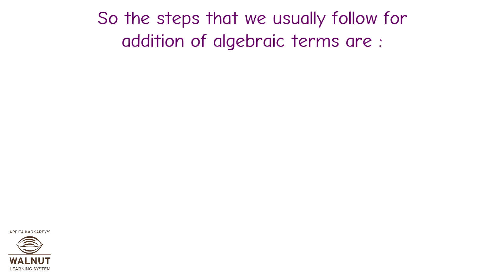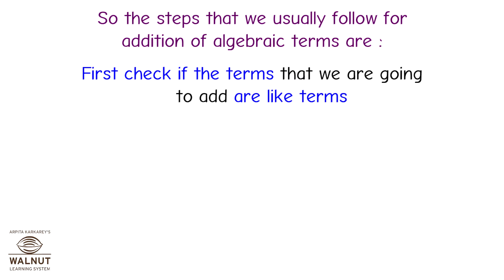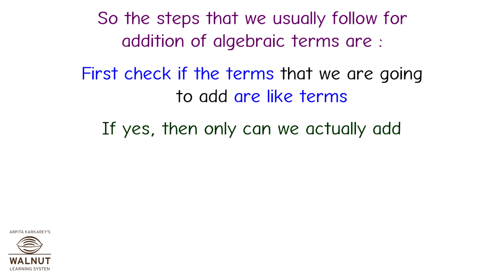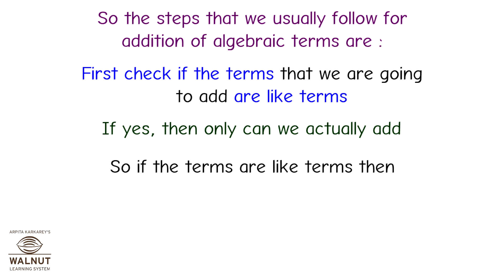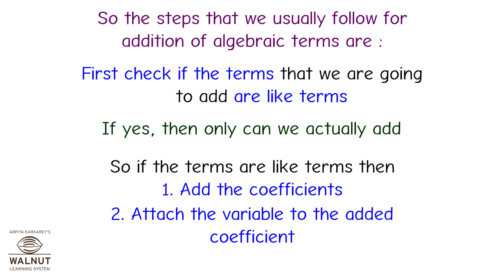The steps we follow for addition of algebraic terms are: first, check if the terms are like terms. If yes, then only can we actually add. If the terms are like terms, then: step 1 — add the coefficients; step 2 — attach the variable to the added coefficient. Remember that checking for like terms should always be the first step.